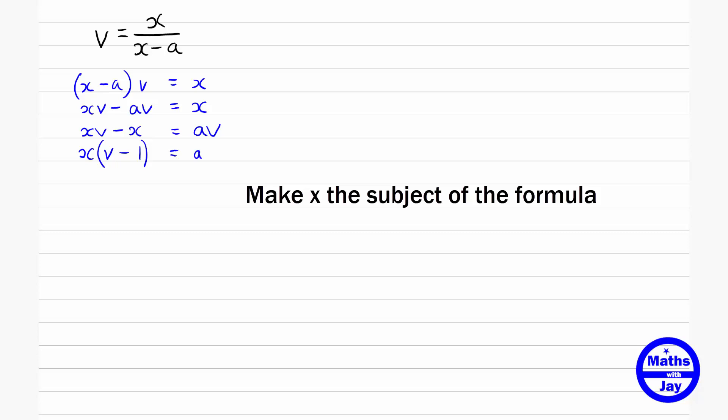So now we can divide both sides by v minus 1, and that gives us x. So have a good look at how we managed to do that.